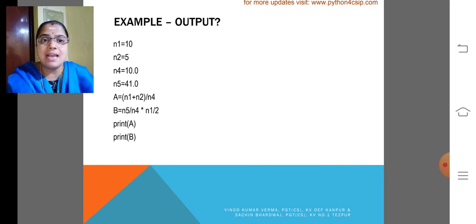Look at the example. Could you please tell what is the output of this? So, the output A and B is in the type of float. Why? Because N4 and N5 are floating point numbers. It is easy to say.